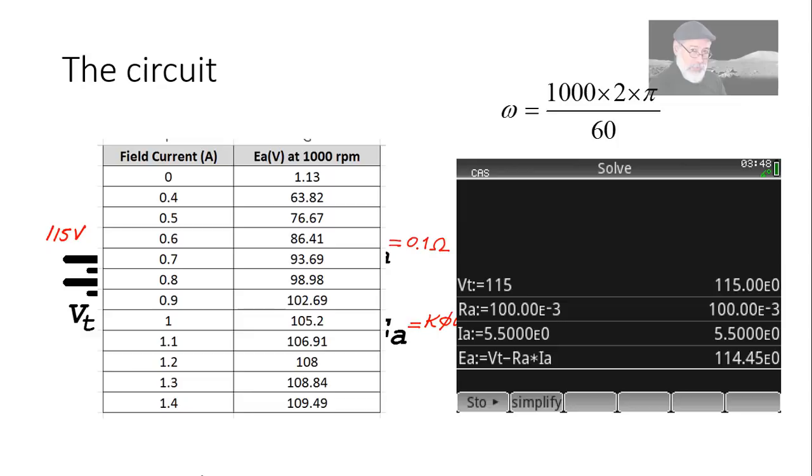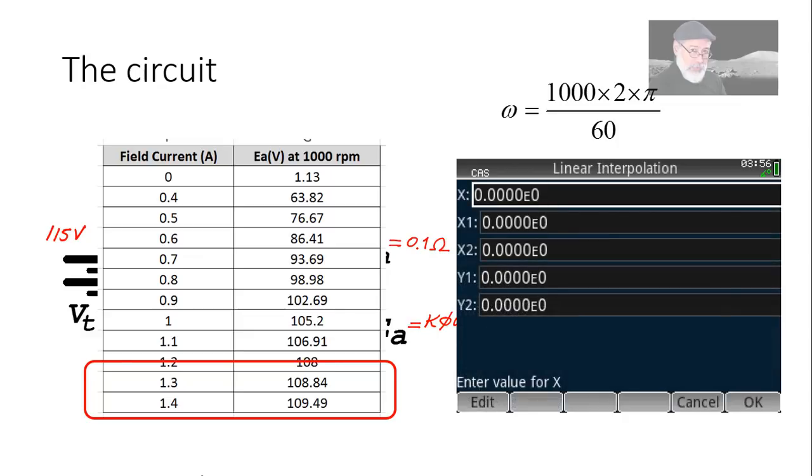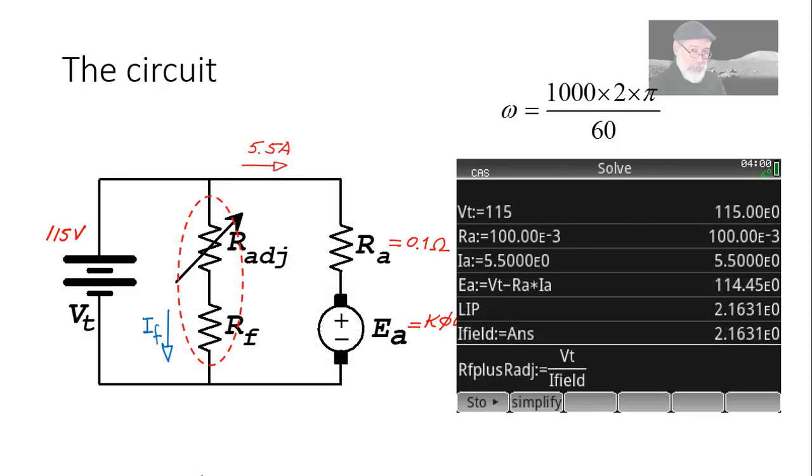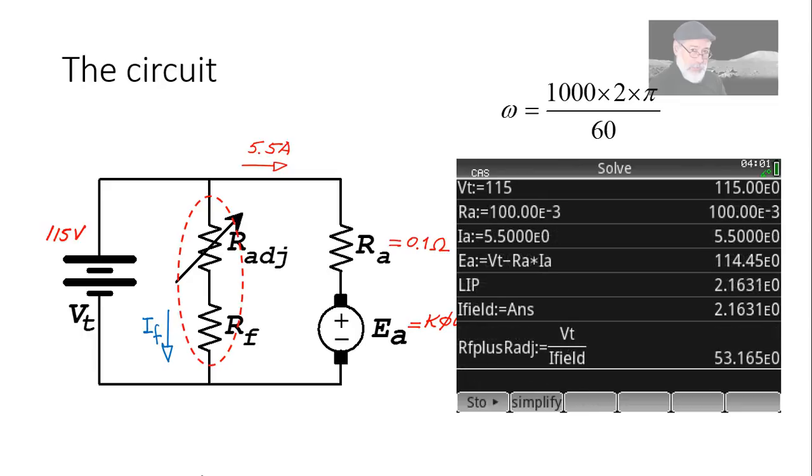We go with that value to the table and interpolate. You say, oops, that value is outside of the range. So we extrapolate using the two values the closest to the one we're looking for, 108 and 109. How? We use the linear interpolation program and enter the value for x. And that would be Ea, the one we computed. And then we enter 108, 109, 1.3, 1.4, interpolate. And that is the value of IF, 2.16 amperes. We assign that to the variable I field. The value of the total resistance in the field circuit is Vt divided by I field. Ohm's law. That is 53 ohms. And that is the answer to that question.